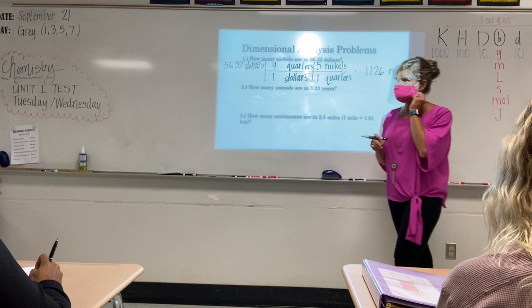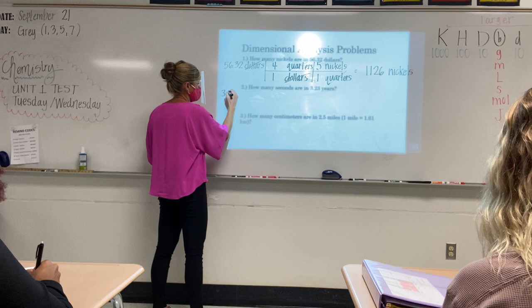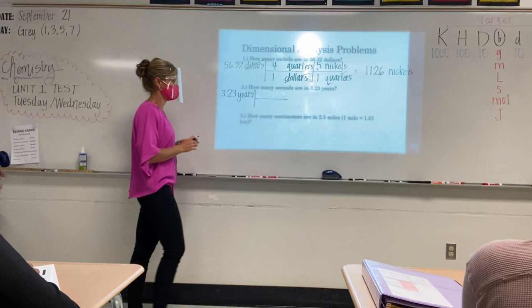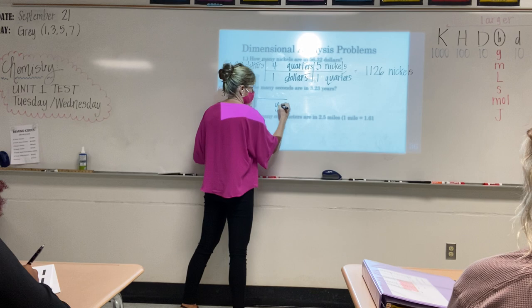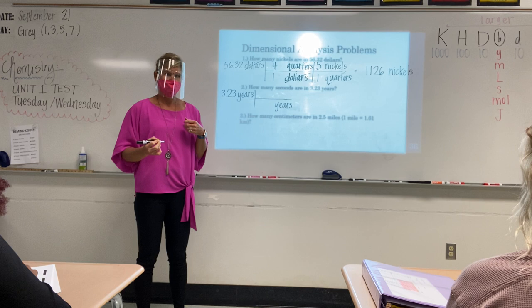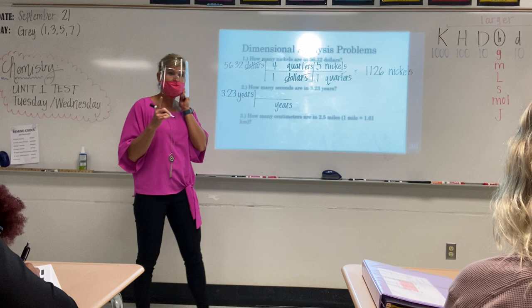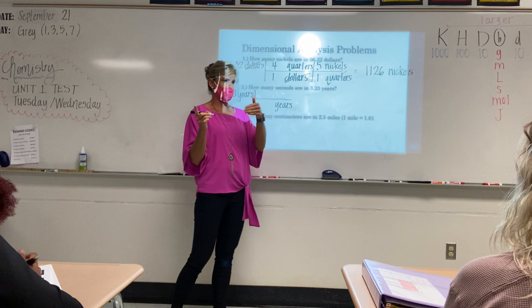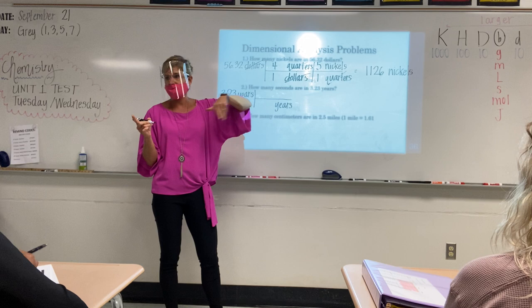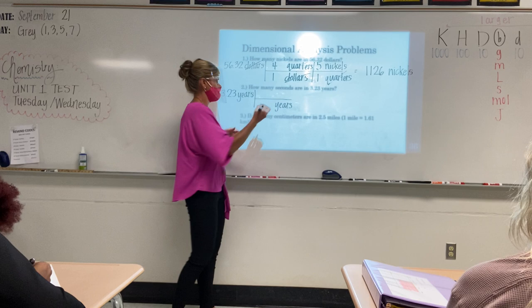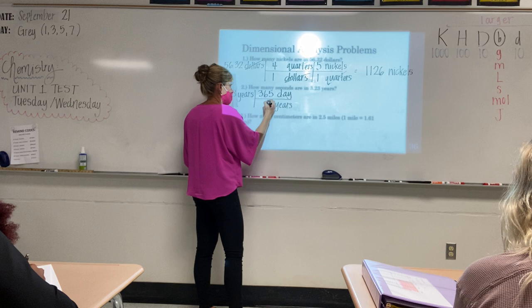How many seconds are in 3.23 years? We're going to start with our given: 3.23 years. Years was on top, so where is it going to go next? On the bottom. Do you know how many seconds are in a year? I don't. What should we go to next? Days — very good. Now I want to tell you, don't go to months. Never go from years to months, because we don't have an equal number of days per month. So always go from years to days. 365 days is one year.